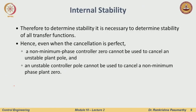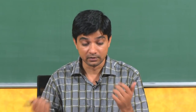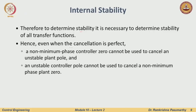To determine stability it is necessary to examine the stability of all transfer functions within the system. Even when there is perfect cancellation, we cannot just say the unstable pole is cancelled by a right-half-plane zero so the system is stable. A non-minimum phase controller zero cannot be used to cancel an unstable plant pole, and likewise, an unstable controller pole cannot be used to cancel a non-minimum phase zero. We must be very careful about such cancellations.